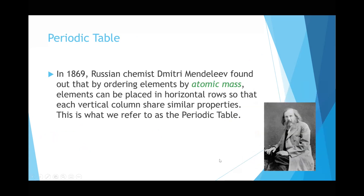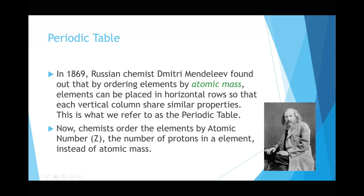Now let's talk about the periodic table. In 1869, there was a Russian chemist called Mendeleev who found that if you order elements such that elements on top of each other share similar properties, you can get a periodic table. He was the founder of the periodic table, but he actually ordered elements by atomic mass. Today chemists order them by atomic number Z, which is the number of protons in an element.